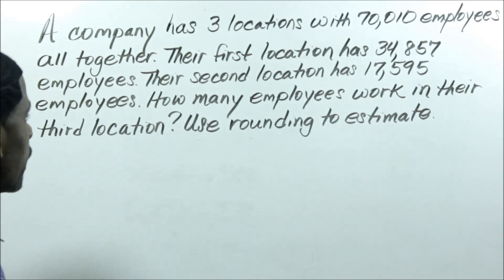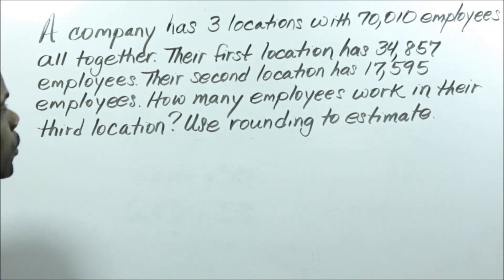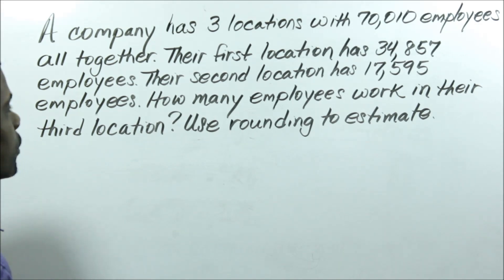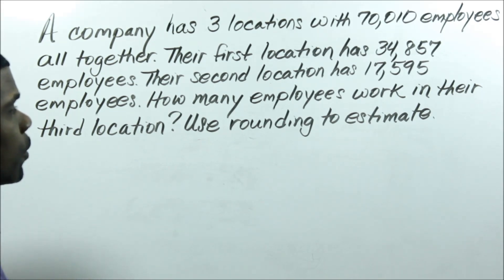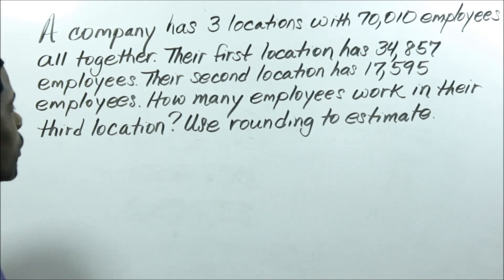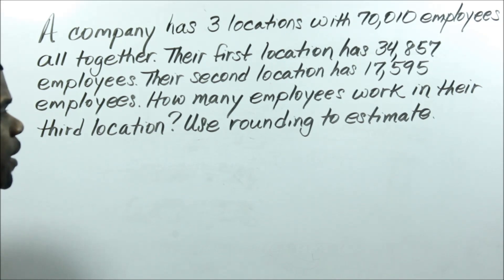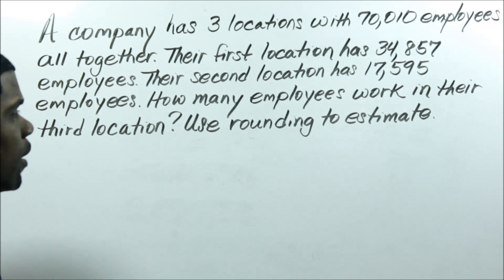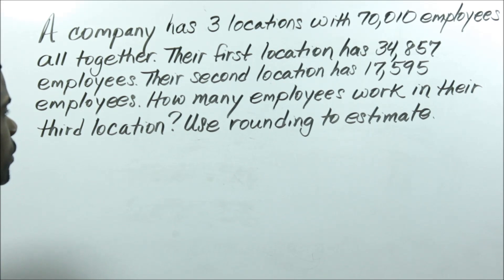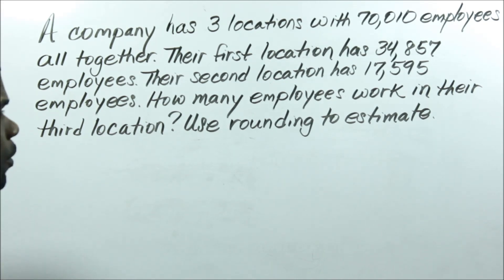A company has three locations with 70,010 employees altogether. Their first location has 34,857 employees, and their second location has 17,595 employees. The question is: how many employees work in their third location?